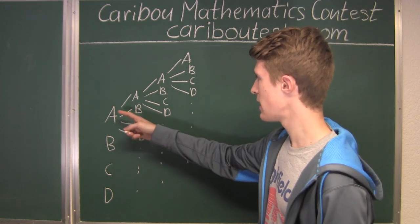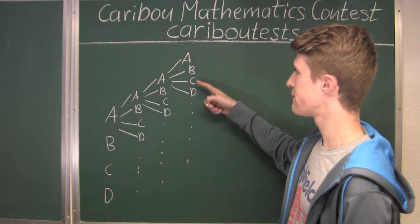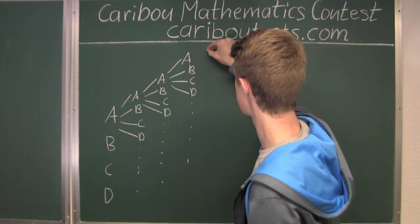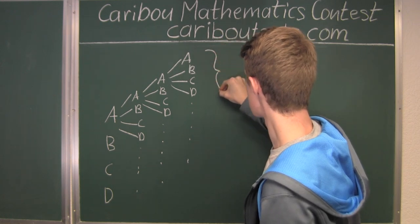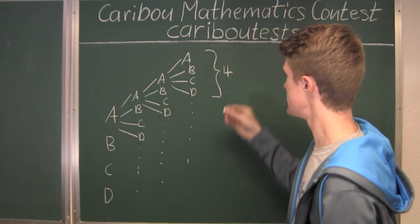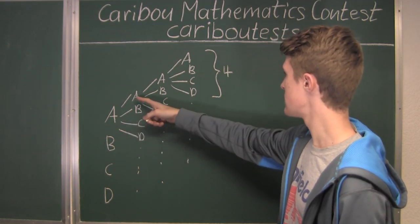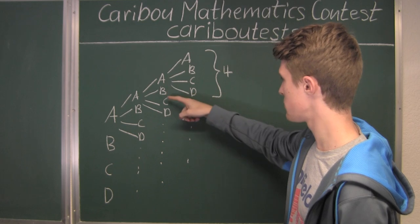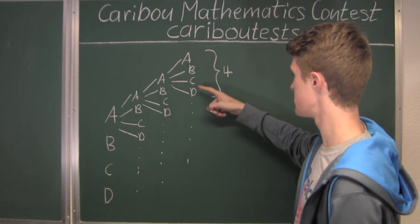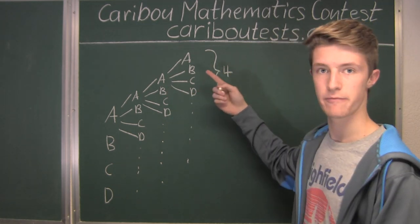So starting with A, A, A, we then have four combinations. Now, starting with only A, A, we then have one, two, three, four times this number here. So that would be four times four.